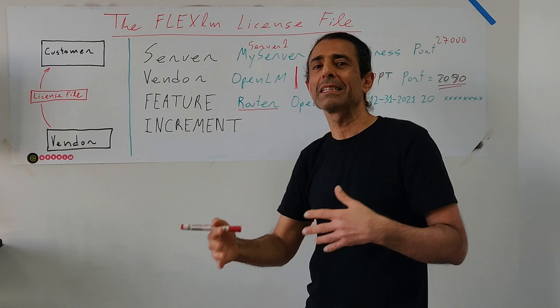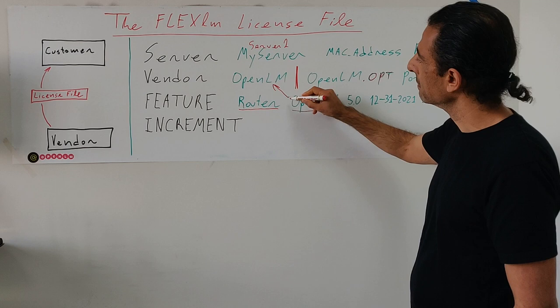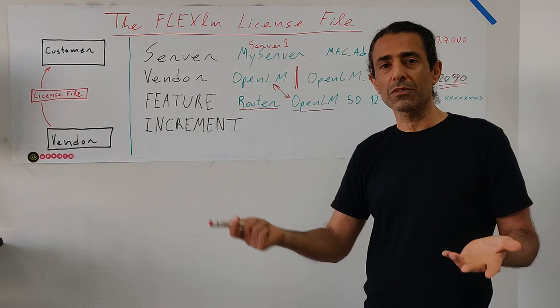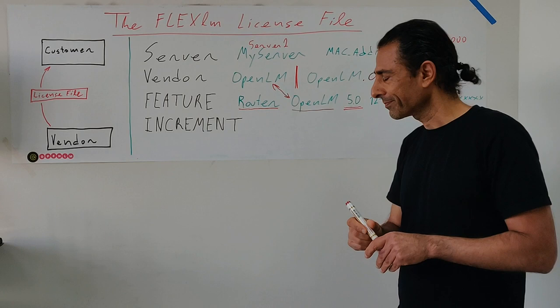There is another product name field that is typically used — you won't see it as a tier here, only the feature name. The second field is the vendor name, which is the same as the vendor line — in this case 'OpenLM'. After that comes the version of the software. In FlexLM you can actually license by version, which is a very important capability in licensing — here we are talking about version 5.0.